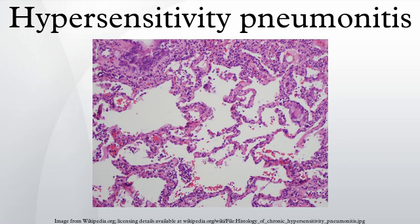The ImmunoCAP technology has replaced this time-consuming, labor-intensive method with automated CAP assays and FEIA that can detect IgG antibodies against Aspergillus fumigatus or avian antigens. Although overlapping in many cases, hypersensitivity pneumonitis may be distinguished from occupational asthma in that it is not restricted to only occupational exposure, and asthma generally is classified as a type I hypersensitivity. Unlike asthma, hypersensitivity pneumonitis targets lung alveoli rather than bronchi.